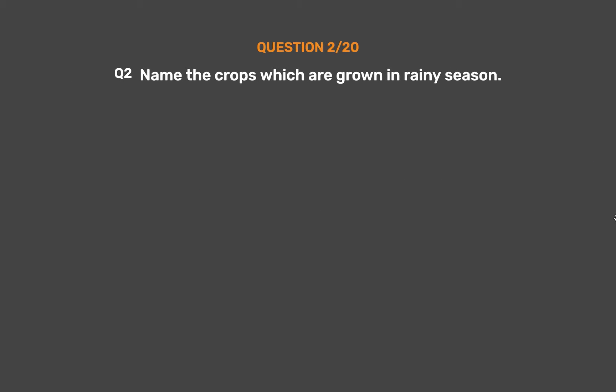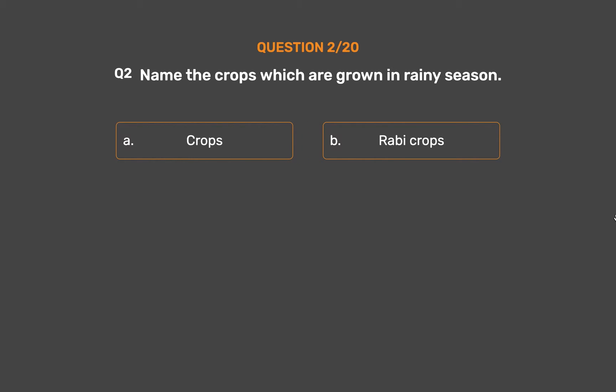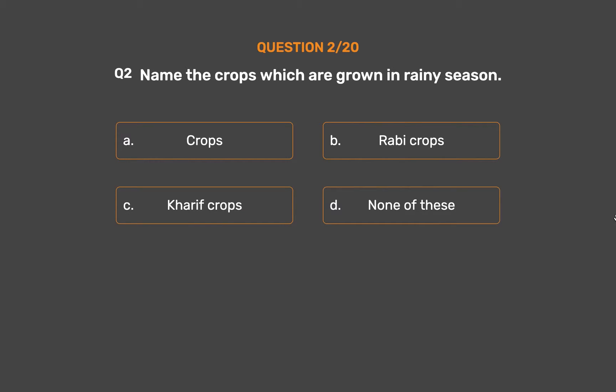Question No. 2: Name the crops which are grown in the rainy season. Option A: Crops. Option B: Rabi crops. Option C: Kharif crops. Option D: None of these.